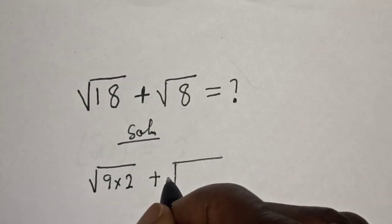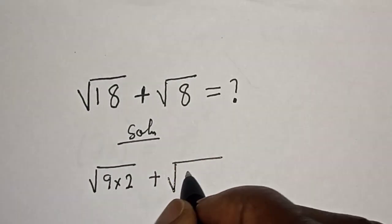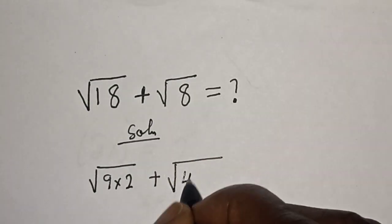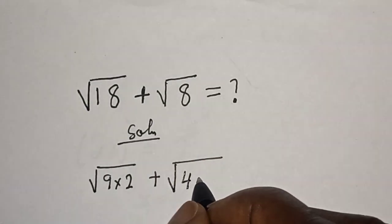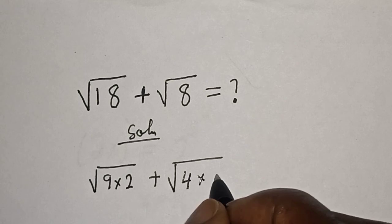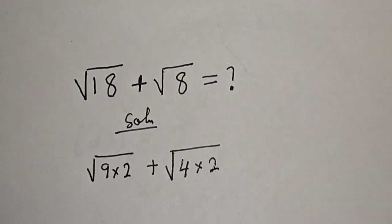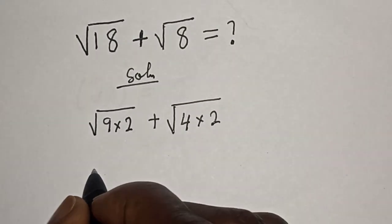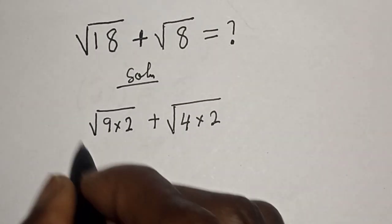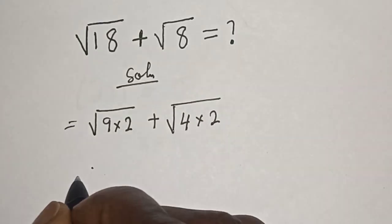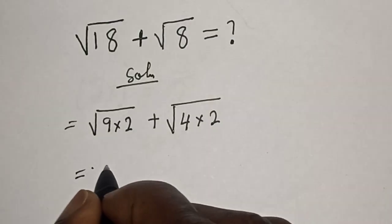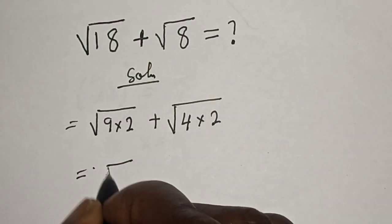Square root of 8 can be written as square root of 4 multiplied by 2. Then this is equal to square root of 9 multiplied by square root of 2, plus square root of 4 multiplied by square root of 2.